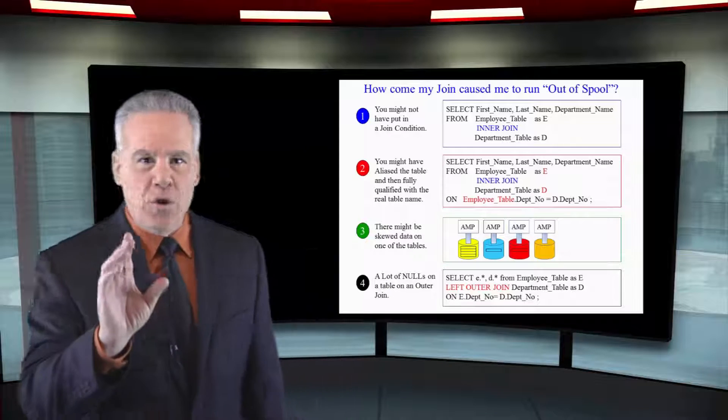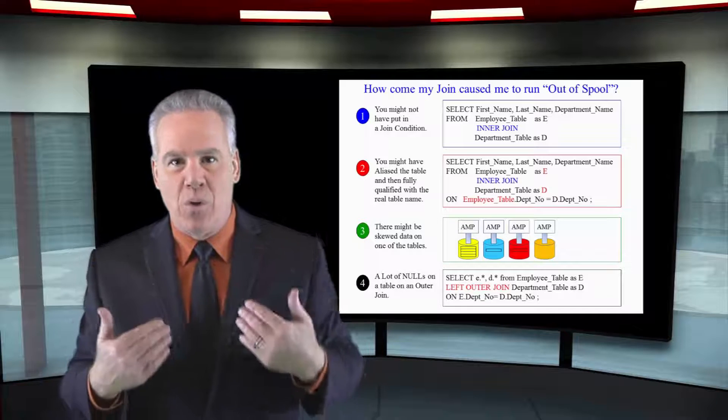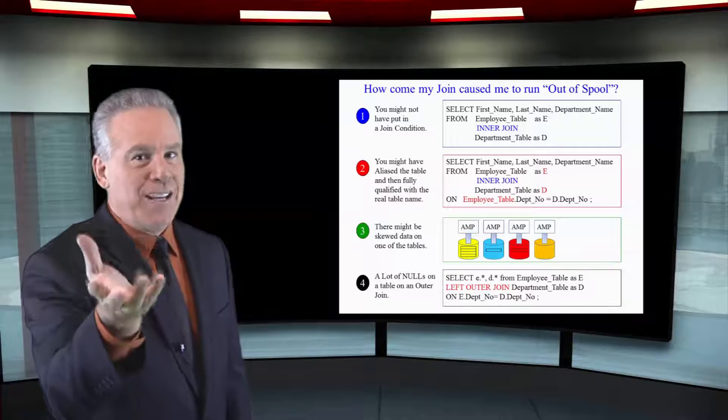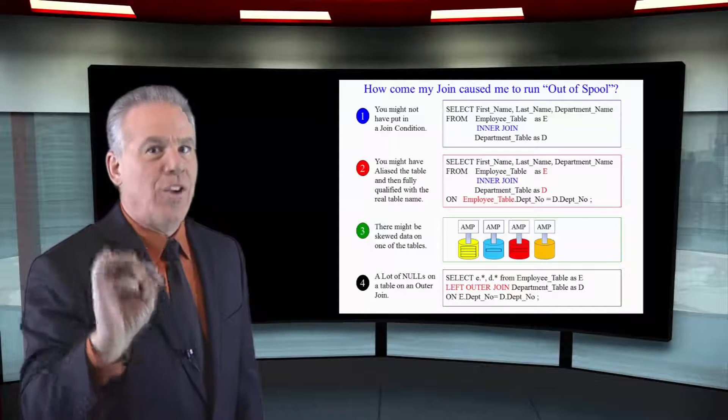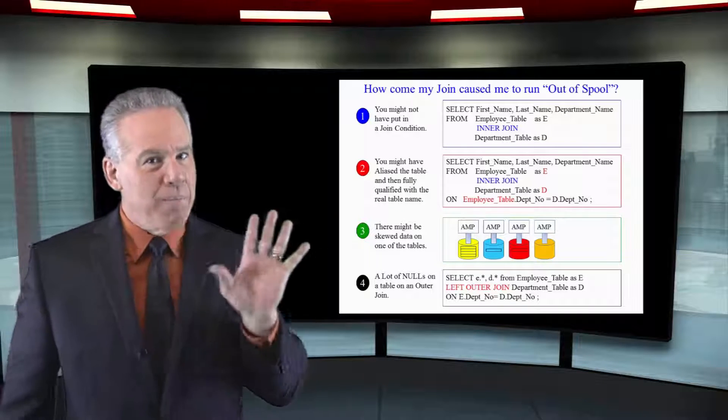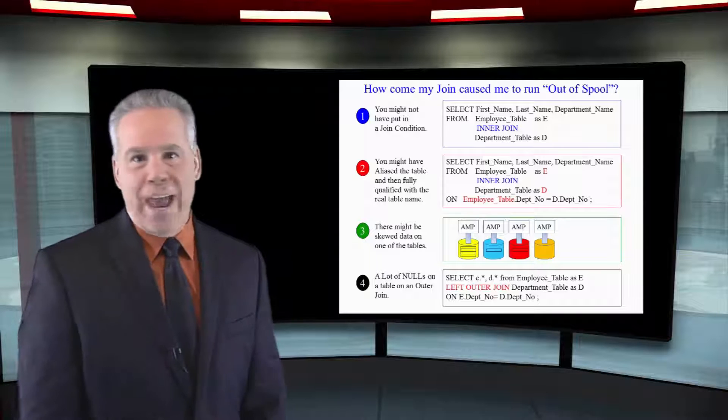So if you write excellent queries, you know what you're doing and you're still running out of spool, it's time to go to the DBAs and say, I need more. But remember, they're going to check those queries. They're real sharp. And if you're writing bad stuff and expecting more space, it ain't going to happen.